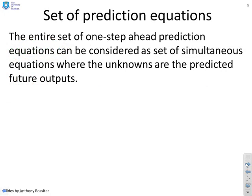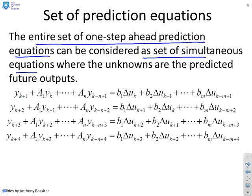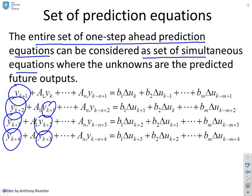How are we going to do it? I'm going to go back to the entire set of one-step-ahead prediction equations. We're going to say these can be considered as a set of simultaneous equations, where the unknowns are the future outputs. I've just written the equations down again, and what do you notice? For example, I've got four equations and how many unknowns have I got? I've got four unknowns. Four equations, four unknowns, linear simultaneous equations, so I should be able to solve these in a straightforward manner, and really the only question is how do I do it to keep my life neat and tidy?